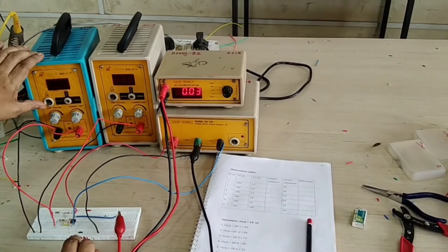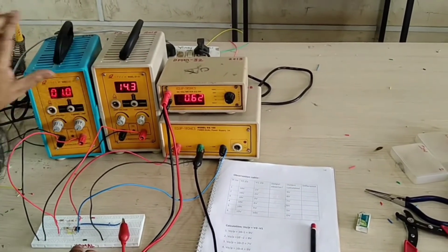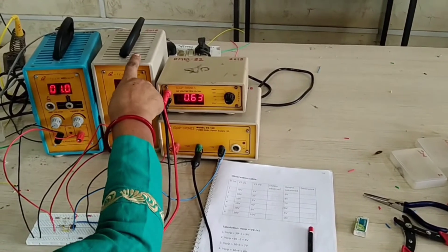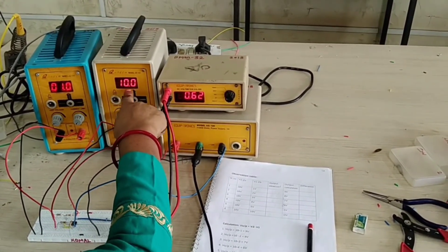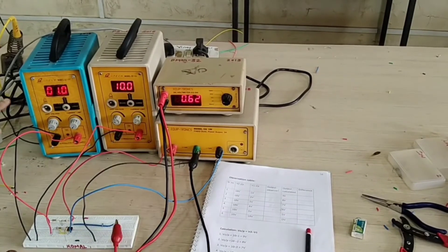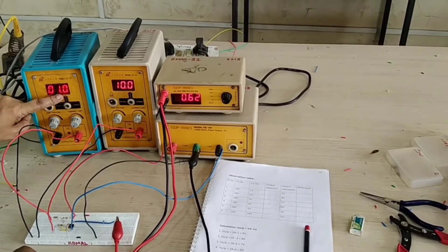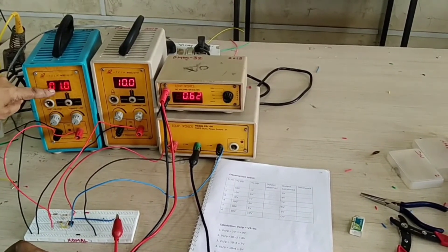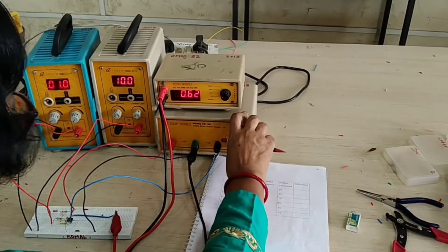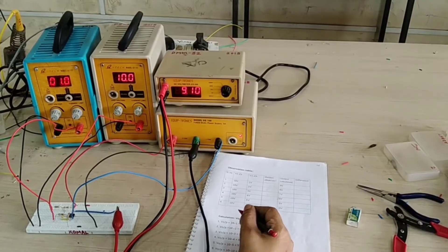Now see here the practical is V2 minus V1. Already this is a 10 volt. So already this is a 10 volt we are accessing and we are connecting here minus 1. Now see here 10 minus 1 your answer will come 9.10, 9.10.